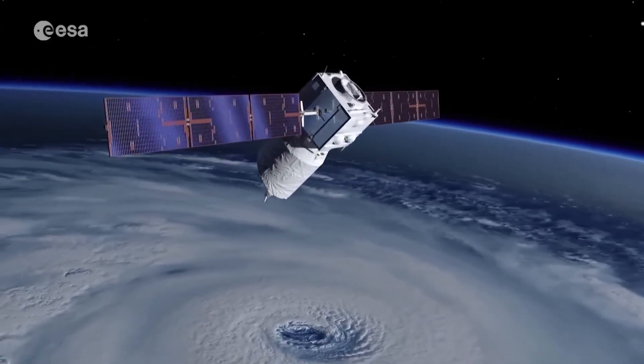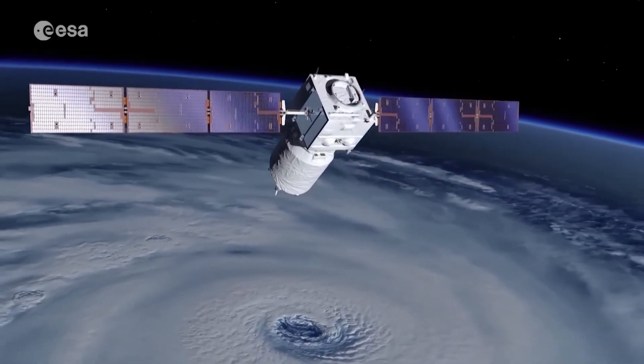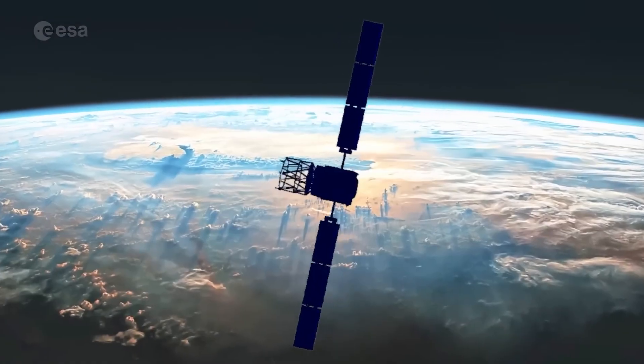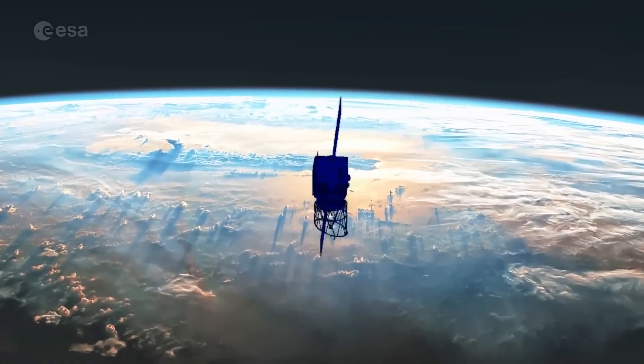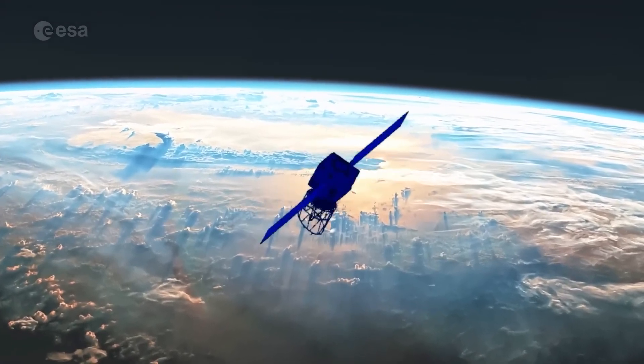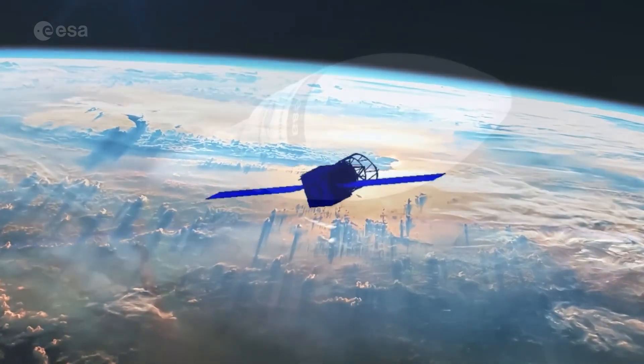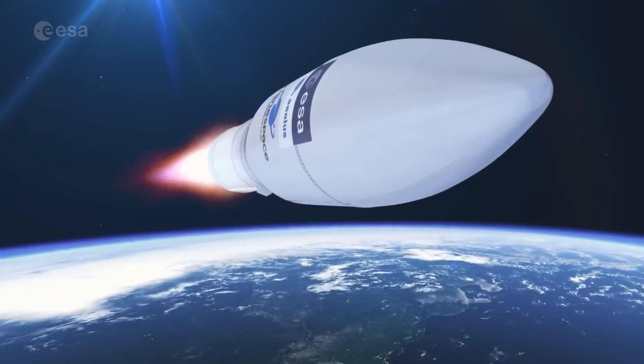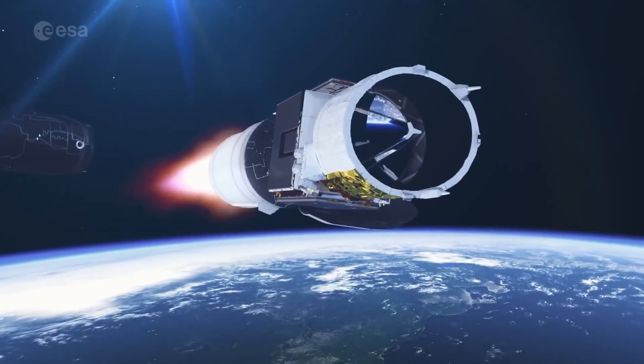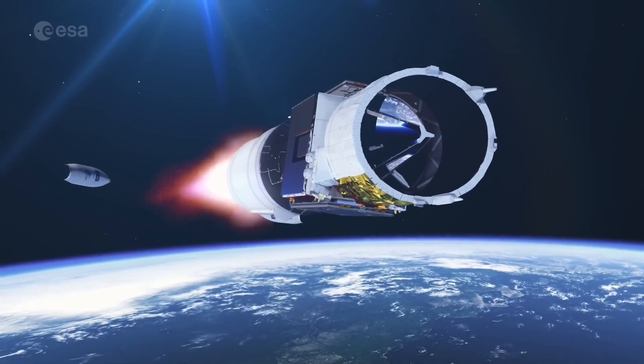But now it's time for Aeolus to come home. Gravity and the grasping wisps of Earth's atmosphere, sped up by solar activity, are dragging Aeolus down from its altitude of 320 kilometers. Aeolus was never designed for a controlled reentry, so the satellite would naturally fall back to Earth.